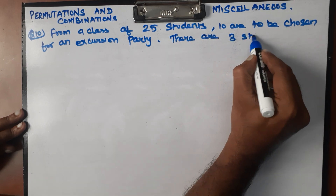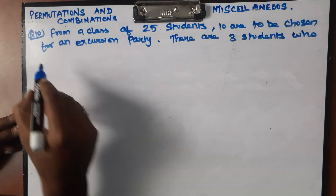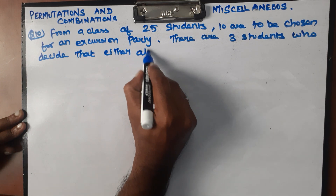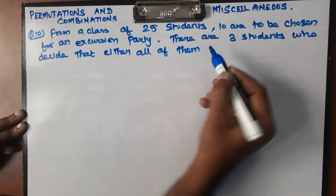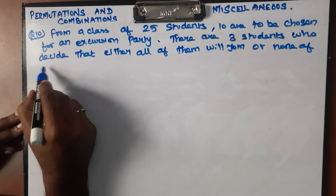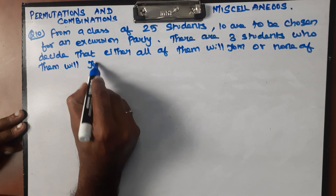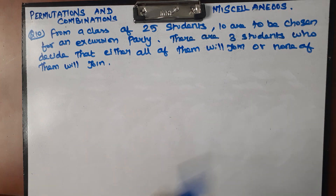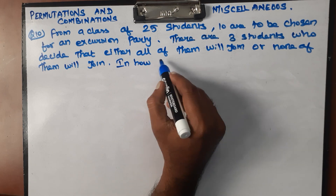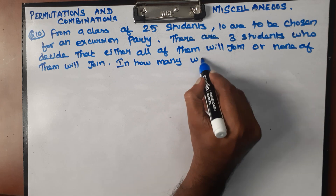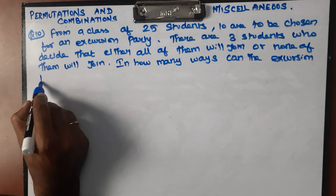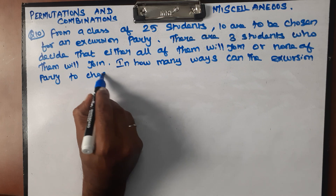There are 3 students who decide that either all of them will join, or none of them will join. In how many ways can the excursion party be chosen?